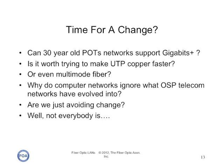Is it time for a change? Should we continue using 30-year-old POTS networks to support multi-gigabit LANs? Is it worth trying to make UTP copper faster, or even multi-mode fiber? We're up against bandwidth limits with multi-mode fiber now. Why do computer networks ignore what outside plant telecom networks have evolved into, taking fiber straight to the home? Are we just avoiding change? Well, not everybody is.